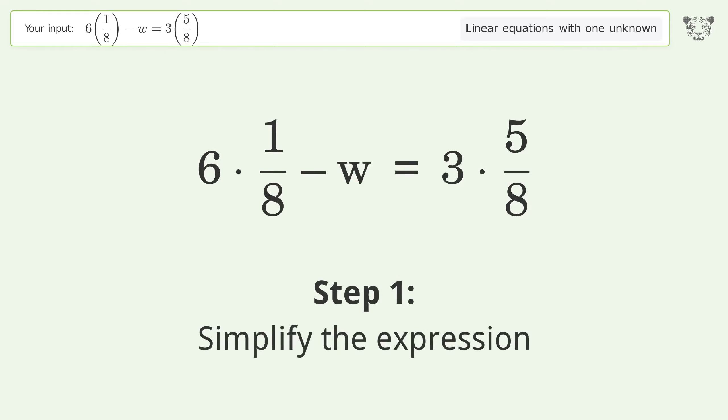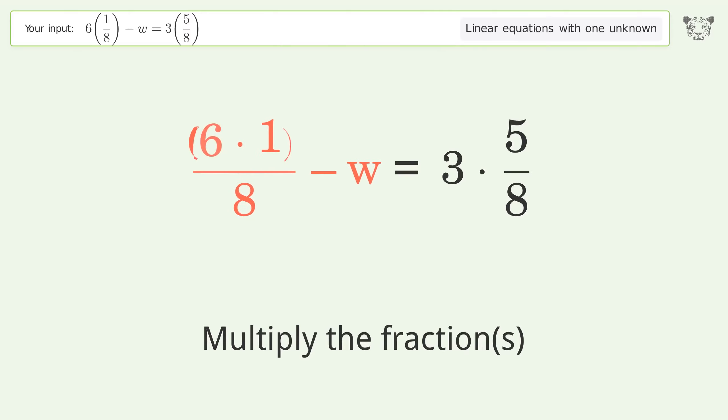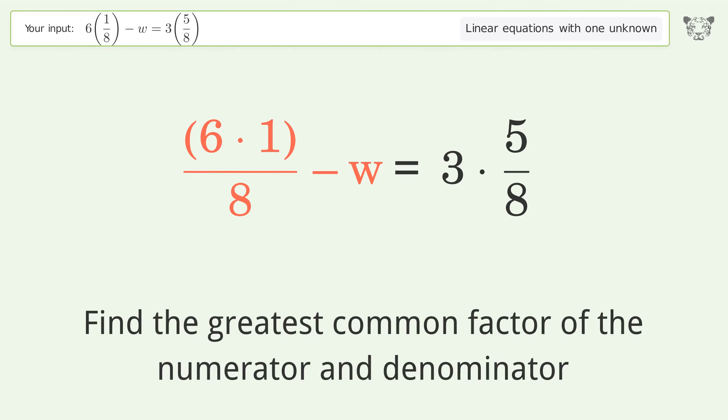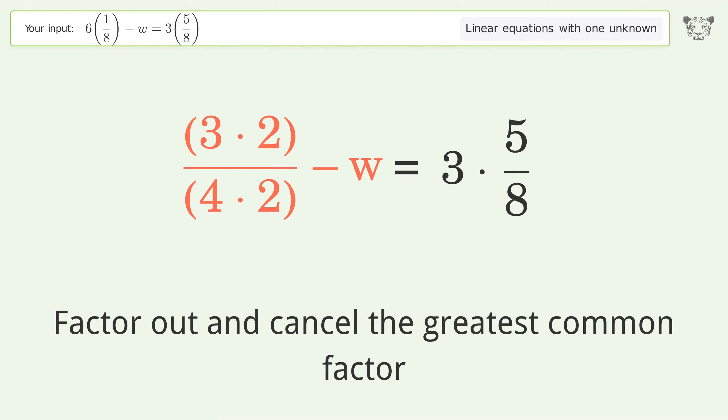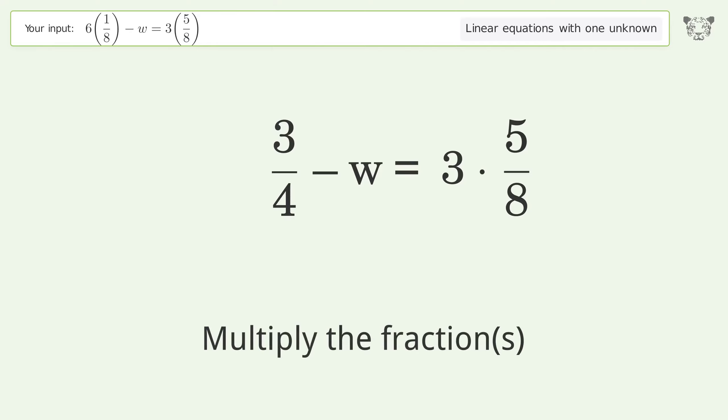Simplify the expression. Multiply the fractions. Find the greatest common factor of the numerator and denominator. Factor out and cancel the greatest common factor. Multiply the fractions. Simplify the arithmetic.